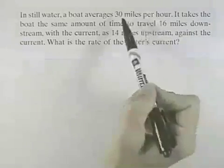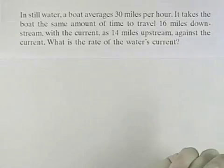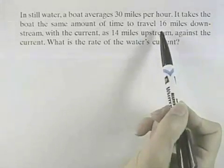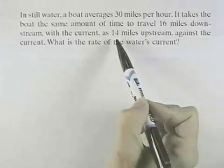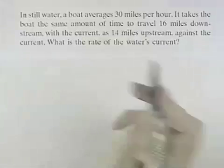In still water, a boat averages 30 miles per hour. It takes the boat the same amount of time to travel 16 miles downstream with the current as 14 miles upstream against the current. What's the rate of the water's current?